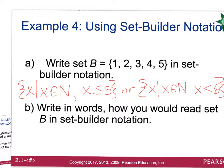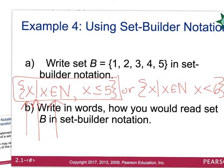If I was looking at a set in set builder notation, I would read it as: 'X such that X is in the set of natural numbers and X is less than or equal to 5.' That's how I would read that in words.